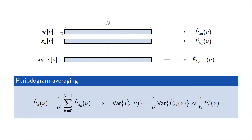One can show that if these blocks are independently drawn from the process, the variance of this improved estimate will only be 1/K times the variance of any individual estimate. Since the variance of the periodogram and the modified periodogram is proportional to the squared power spectral density, the variance of this new estimate will only be 1/K times the original power spectral density squared. So if you choose K very large or have access to many data blocks, you could create an estimate with very small variance.